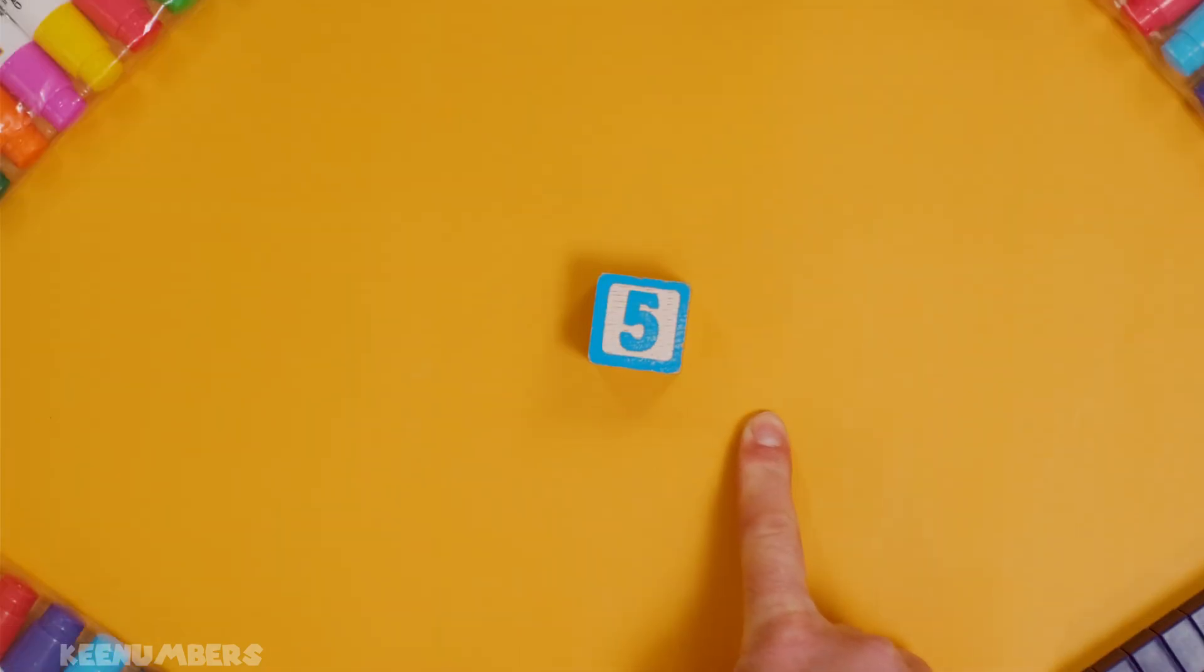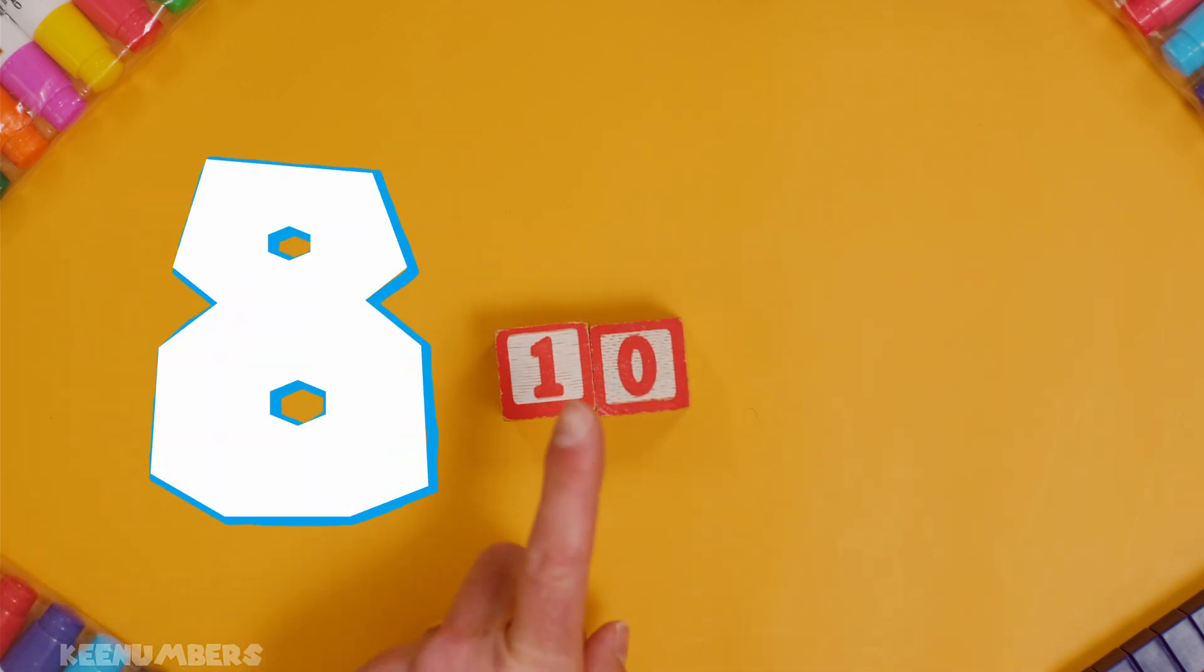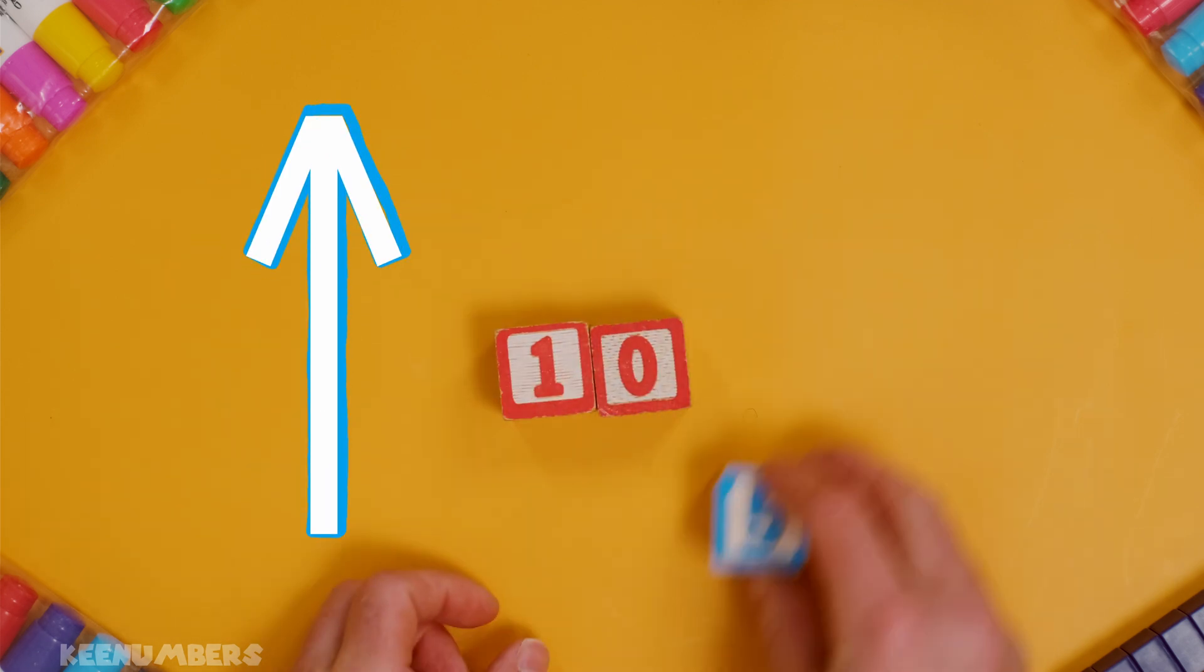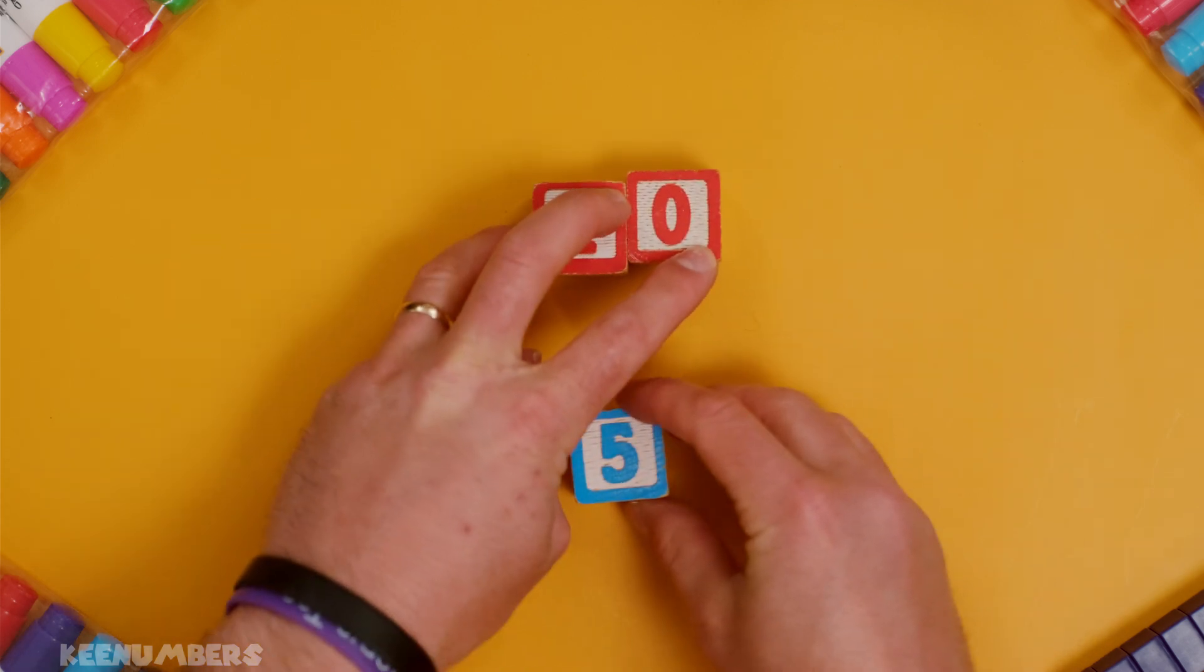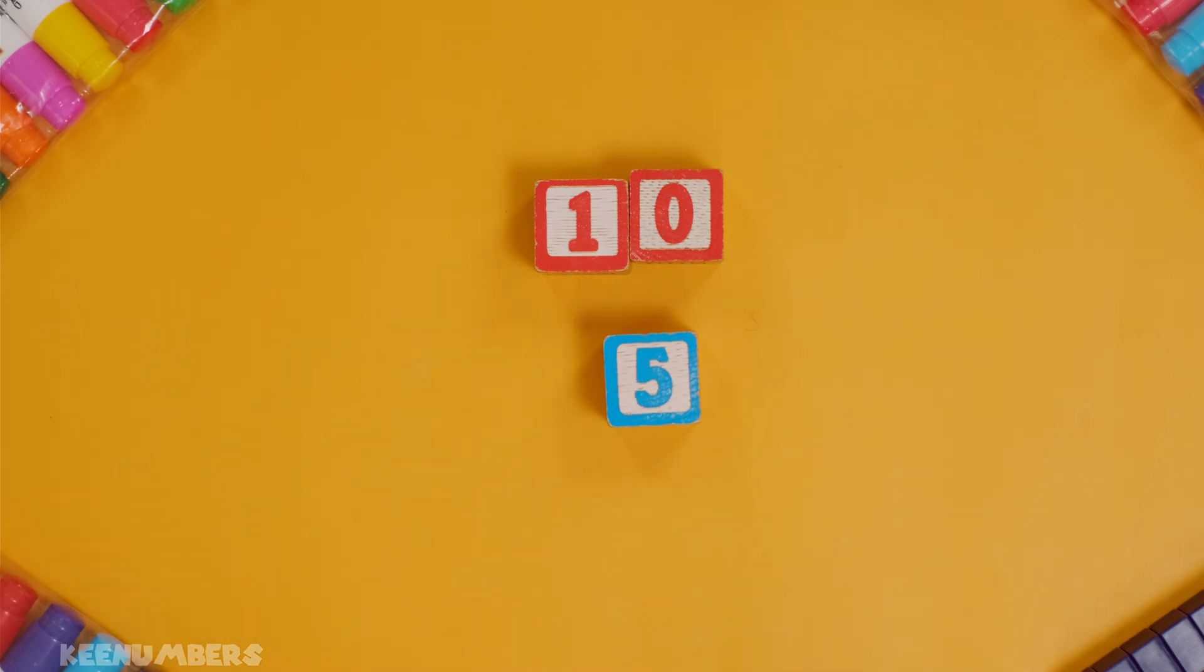This is a trick question. Five! There's nothing else here, just five. So, do we round down to zero, or do we round up to ten? Whoop! To ten. Ends in five, so we round up to ten. Five rounds up to ten. Not zero.